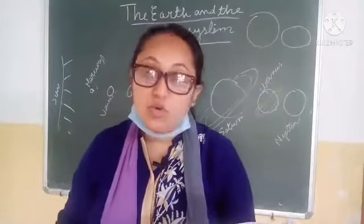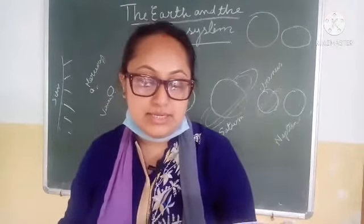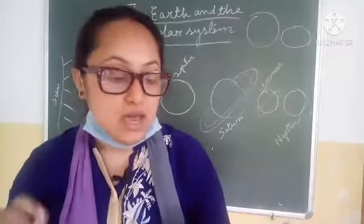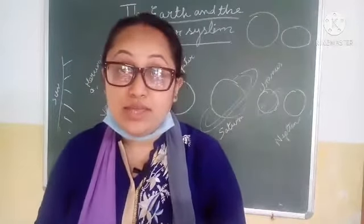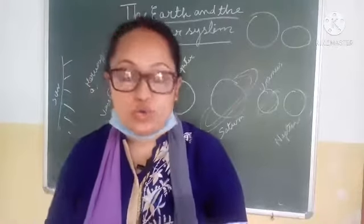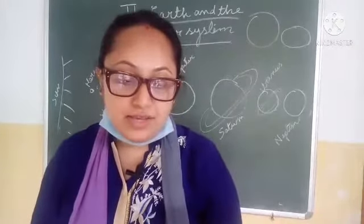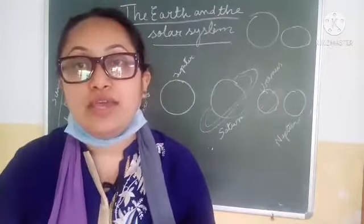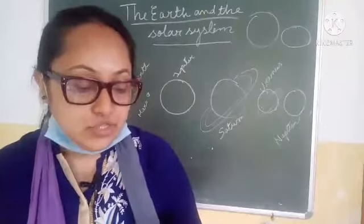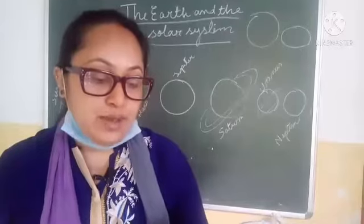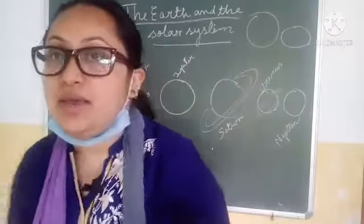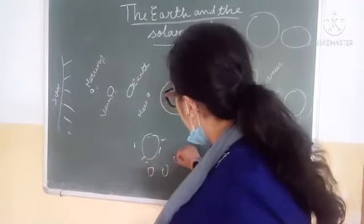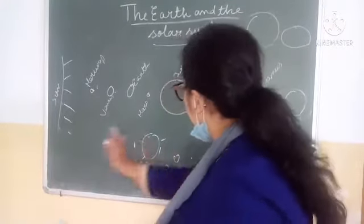The moon was the only known satellite in the solar system until 1610. Before 1610, people believed there was only one satellite, which was the moon. But now there are more than 100 known satellites in the solar system. Mercury and Venus are the only planets which do not have any known satellites. All planets revolve around the sun in a west to east direction.